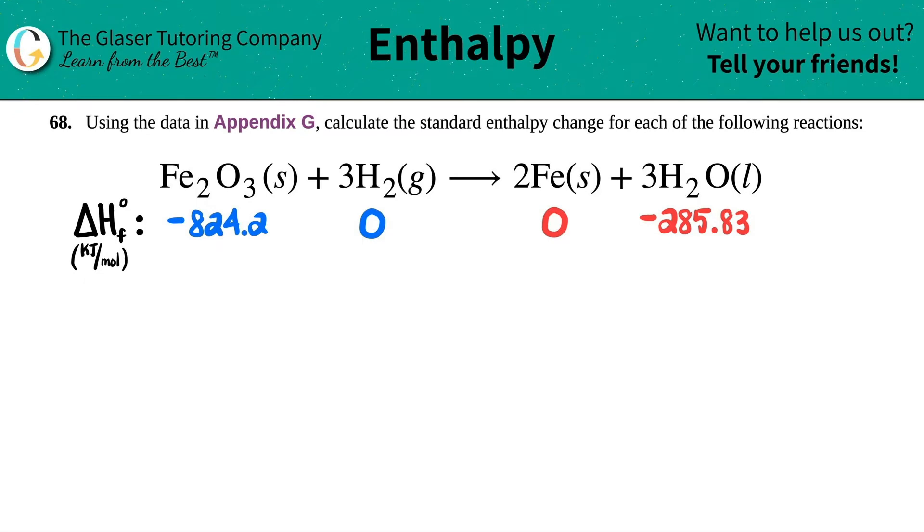Number 68. Using the data in Appendix G, calculate the standard enthalpy change for each of the following reactions, and then we have this reaction in this example.